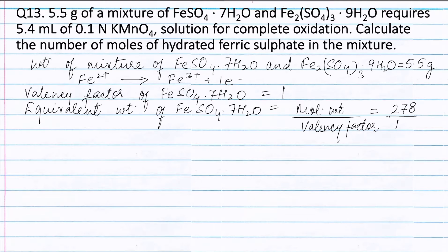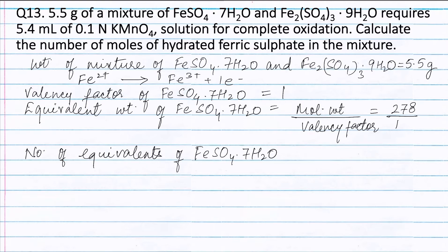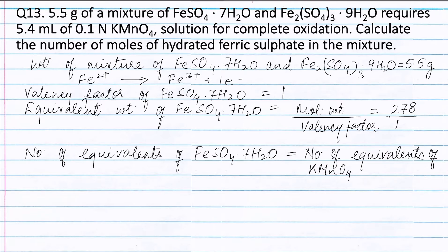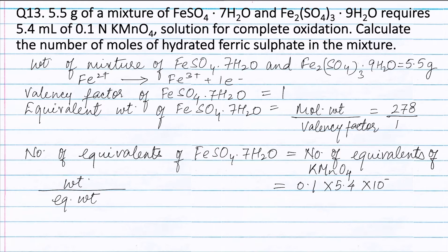The number of equivalents of FeSO4·7H2O equals the number of equivalents of KMnO4. Number of equivalents of FeSO4·7H2O equals weight divided by equivalent weight, and number of equivalents of KMnO4 equals normality (0.1N) multiplied by volume of solution in liters (5.4 × 10⁻³ liters).